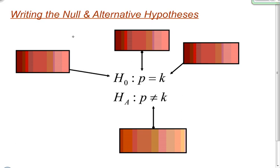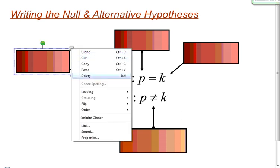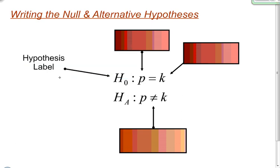In this video, I want to talk about how to write null and alternative hypotheses for a hypothesis test. Here's a general null and alternative hypotheses set, and it's made up of four different parts. The first part is called the hypothesis labels. H sub zero is pronounced H naught, and H with an A stands for the alternative hypothesis.